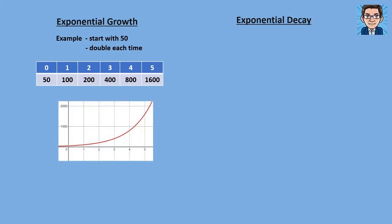The graph would start at 50 and then it goes up at an increasing pace — up a little bit, then more, then more. So an exponential growth pattern is going to look something like this shape, where after a while it really starts to take off.